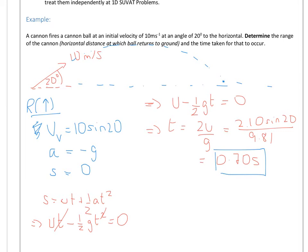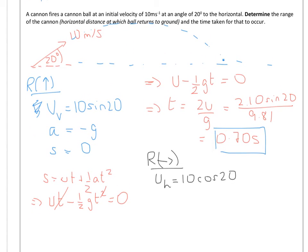And what we're going to do at this point is resolve horizontally so we can see how far. So u in the horizontal direction is 10 cosine 20. Now we know the acceleration in the horizontal direction is 0, because there's no force acting that way.